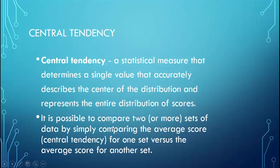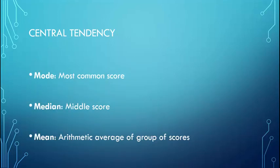Once you have computed a measure of Central Tendency, it's possible to compare two or more sets of data by comparing the average score. So if I have two classes taking Psychology 259 and I give each class a final exam, and one class gets an average score of 80 and one gets 60, now I can compare those two classes and say the first class did better. The three measures are: mode — the most common score, median — the middle score, and mean — the average.